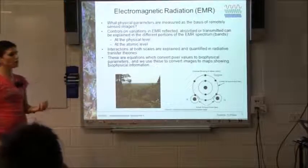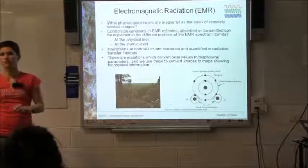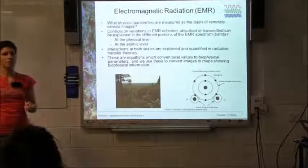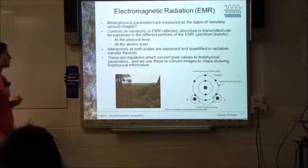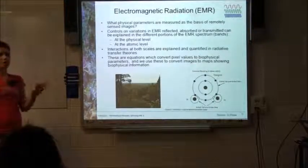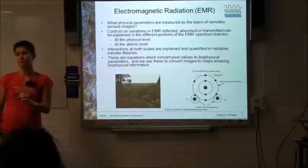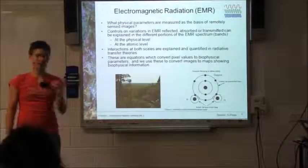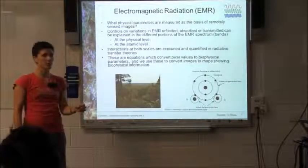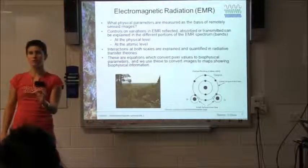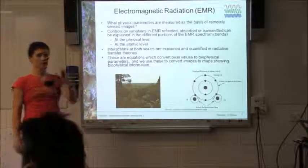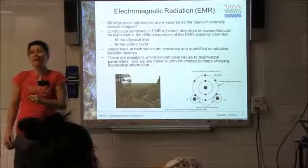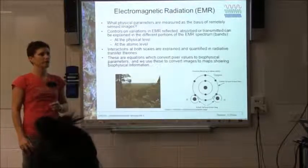That allows us not only to identify different features on the ground, but to start to measure quantitative variables based on their biophysical parameters. We'll look at a number of different scales. If we're thinking about vegetation, for example, we can start to look at individual pigments like chlorophyll, then look at the leaf scale, or build that up to canopies and even forest levels. All these different levels and scales actually affect the way light is reflected and absorbed.